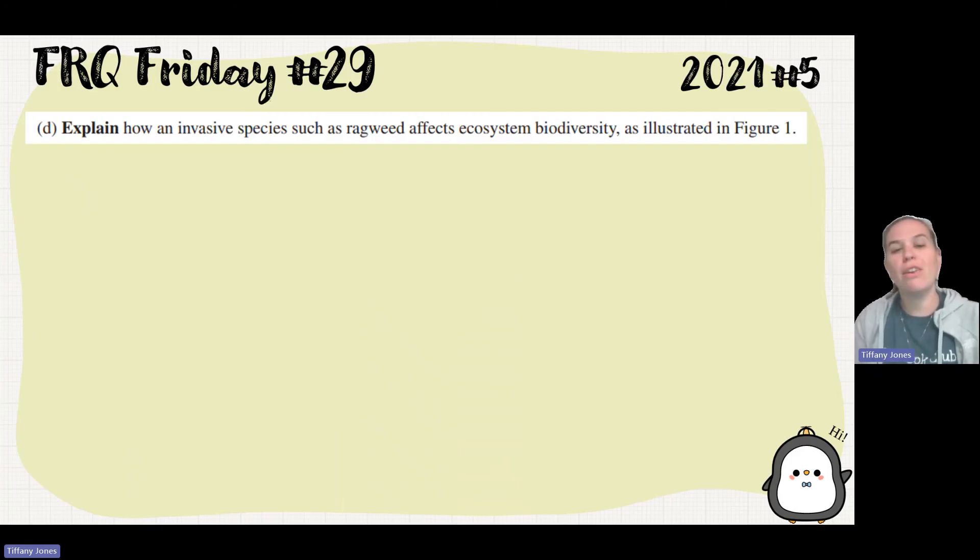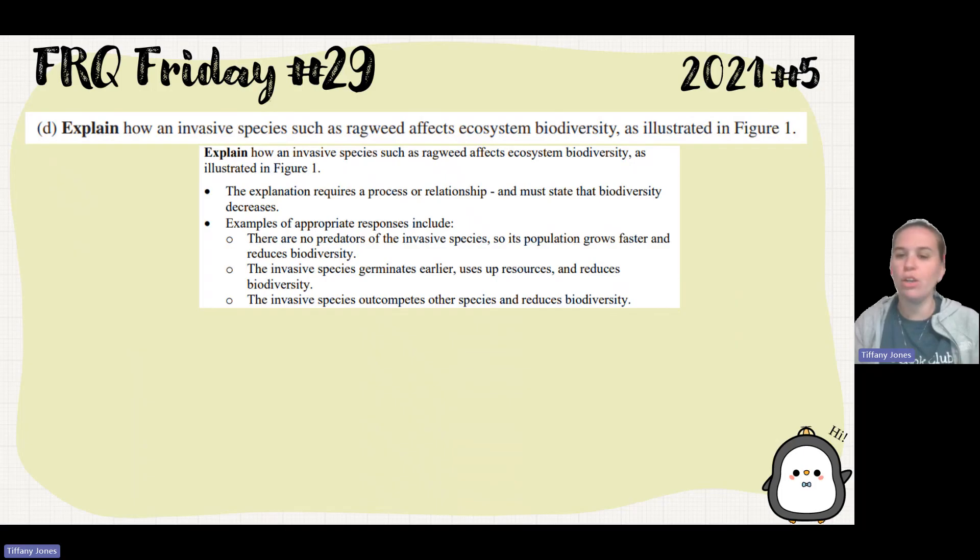Part D: Explain how an invasive species such as ragweed affects ecosystem biodiversity as illustrated in Figure 1. Why would I see there to be a decrease of biodiversity that we saw in that plot A? Well, invasive species have no natural predators, and because they have no natural predators, they're going to be able to grow exponentially. Also, as we saw, the ragweed is going to germinate earlier. And since it germinates earlier, it's going to be able to start growing and take up all those resources that doesn't allow these native species to get those resources.